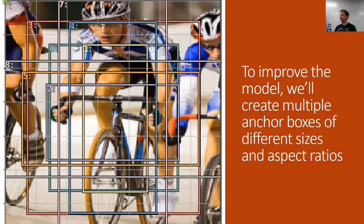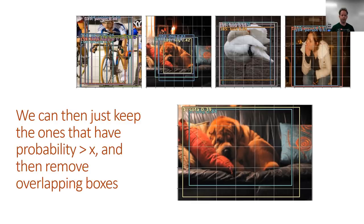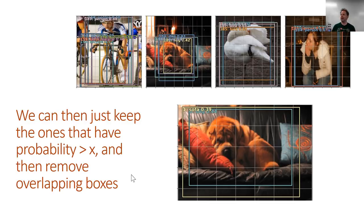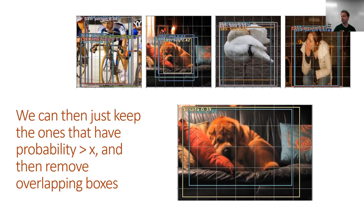We talked about increasing k — the number of anchor boxes for each convolutional grid cell — which we can do with different zooms and different aspect ratios. That gives us a plethora of activations and predicted bounding boxes, which we then reduce to a small number using non-maximum suppression. There's a really interesting paper that a student told me about that attempts to do an end-to-end conv net to replace that NMS piece. Nobody's created a PyTorch implementation yet, so it would be an interesting project if anybody wanted to try.